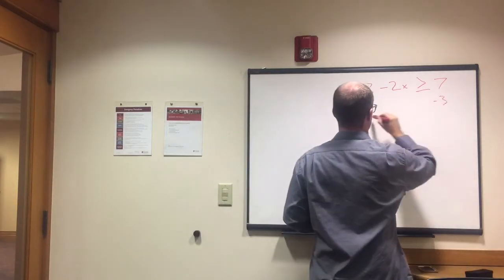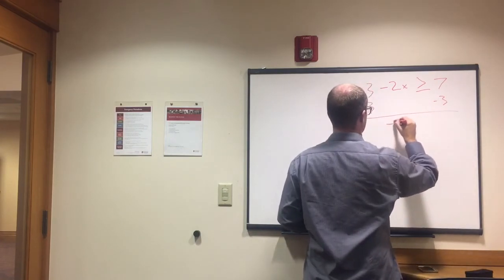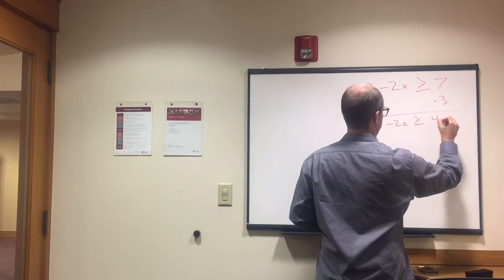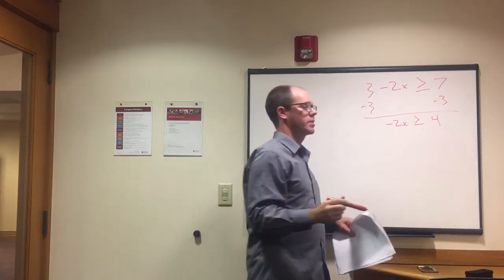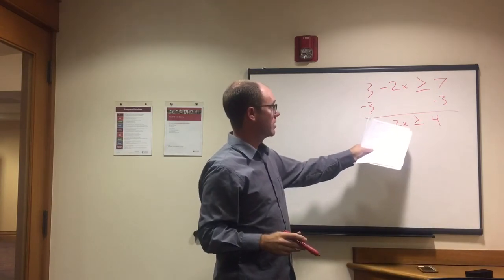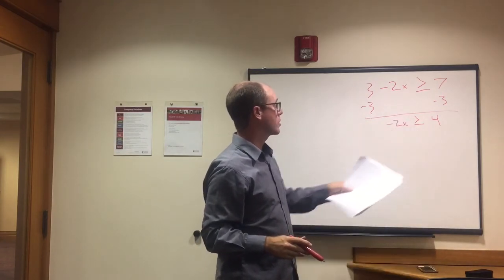Subtract 3. Both sides. -2x ≥ 4. 7 minus 3 is 4. Okay. So now we have -2x is greater than or equal to 4.